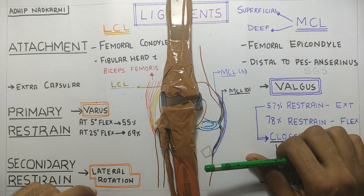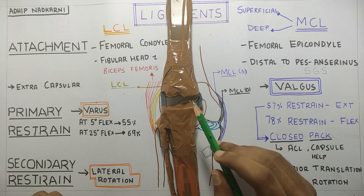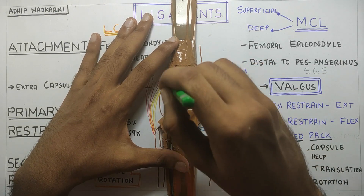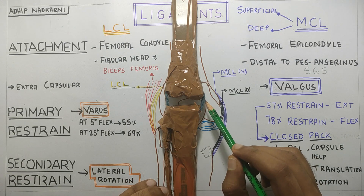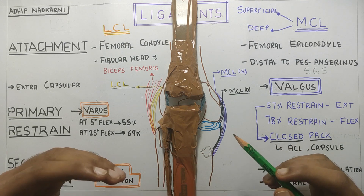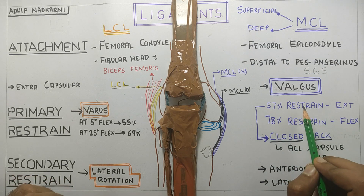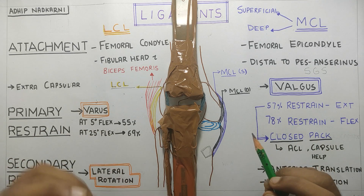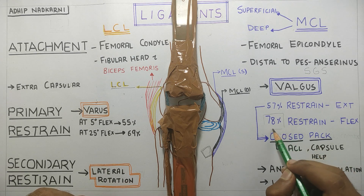So why is this? The reason is when the knee is in extension it is in closed pack position, and in closed pack position the joint capsule is very taut and stabilizes the knee joint. So MCL has to work less to stabilize the knee joint — the capsule along with ACL and other soft tissue structures provides restraint against valgus force. Whereas in flexion, MCL has to work alone and hence it provides 78% of the restraint.